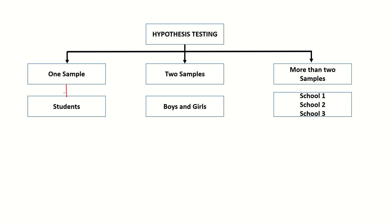Take for example a student scenario. We are going to compare the marks of students. We will be given a population mean (μ) and we are also given sample means (X̄). What we are comparing is whether there is a significant difference between the population and the sample — this is what we have been doing in previous lessons. This is a one-sample test.